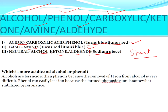To test neutral compounds, take a solution of the organic compound and add a dry sodium piece — dry the sodium piece with filter paper first. If brisk effervescence occurs, it will be alcohol. Before adding the sodium piece to the organic compound, please add calcium sulfate first, because calcium sulfate will remove water molecules present in the organic compound.